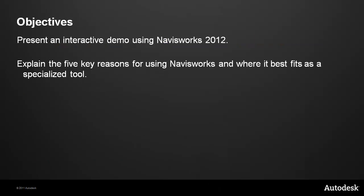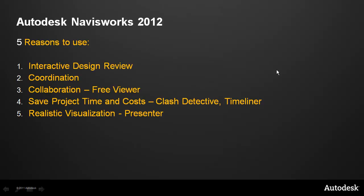Five key reasons for using Navisworks and where it best fits as a specialized tool. First, Navisworks lets you create an interactive design review — you can literally walk through a building and present to other people what you hope to have in reality. You can do a walkthrough of a virtual building and look for errors or omissions at a very early stage, with an avatar figure that you direct through the project. That project is not limited to content from Revit Architecture; it could be from other vendors like MicroStation, or from other Autodesk 2D and 3D products. There are many formats supported to let you bring data into your Navisworks model.